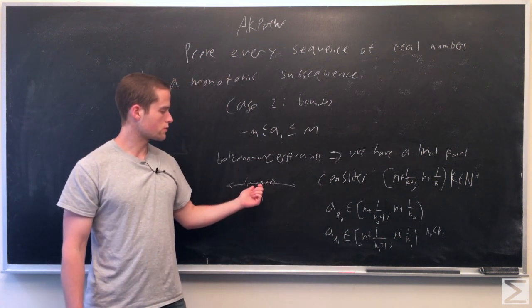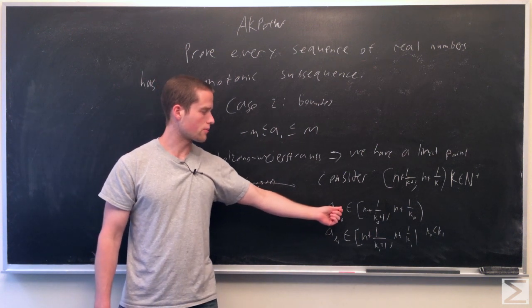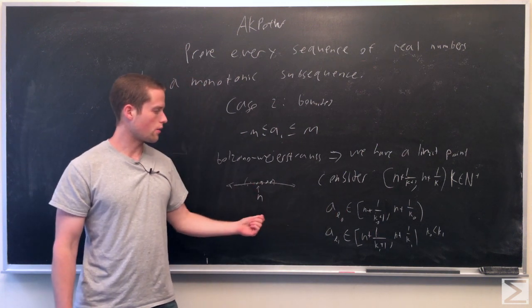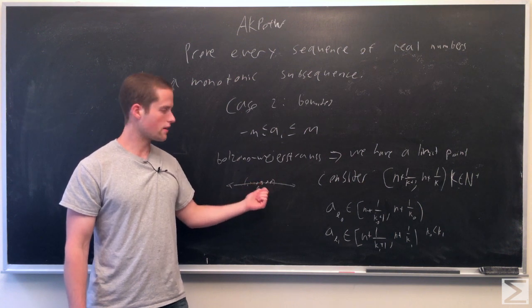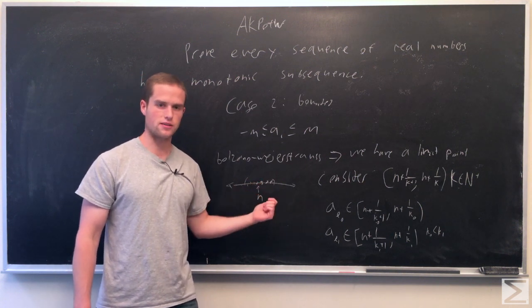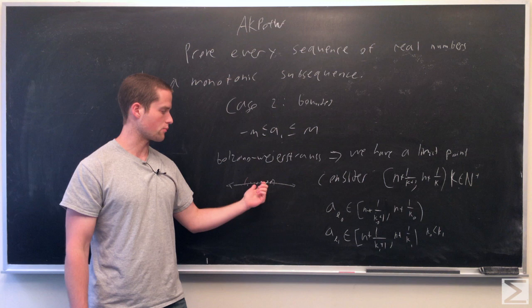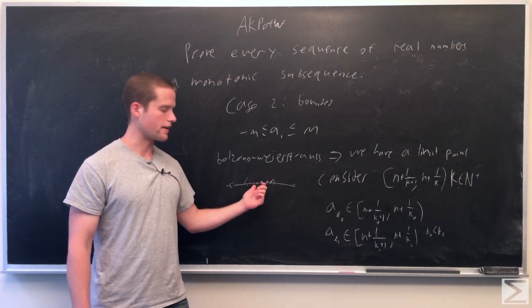Once we do this, we pick AL0, a number in this interval. Now since we have infinite points greater than n, ignore all the points coming before AL0. That's a finite number of points, so we still have infinite points greater than n in any interval.